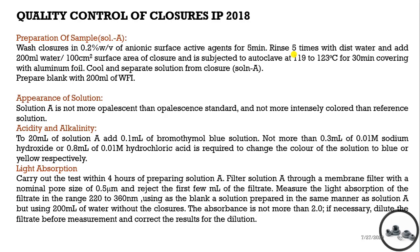When closures are subjected to high temperature and pressure conditions, it may lead to leaching of the constituents of the closures into water, which will serve as a sample for further tests. For preparation of sample, we clean the closure with 0.2% anionic surfactant solution for 5 minutes, then clean it 5 times with distilled water.